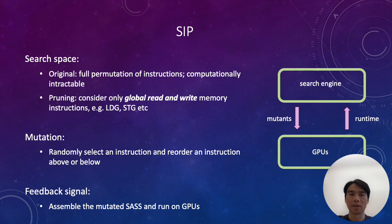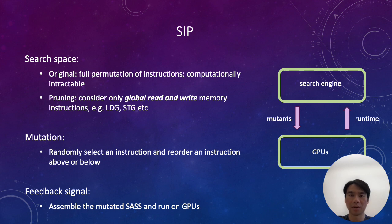Now we give a detailed definition of the search space and mutation policy. The full search space is the full permutation of a CUDA kernel's instructions, which is computationally intractable. We therefore prune the search space by limiting our choices to only consider global memory read and write instructions, such as LDG and STG, which stand for global memory reads and writes respectively. This is because prior work suggests these are the most critical memory operations for latency hiding. Within the search space, the mutation policy randomly chooses one instruction and randomly moves it up or down by one instruction. After a mutation, the mutated SASS assembly is assembled and executed on the GPU, which returns the runtime as the feedback signal.